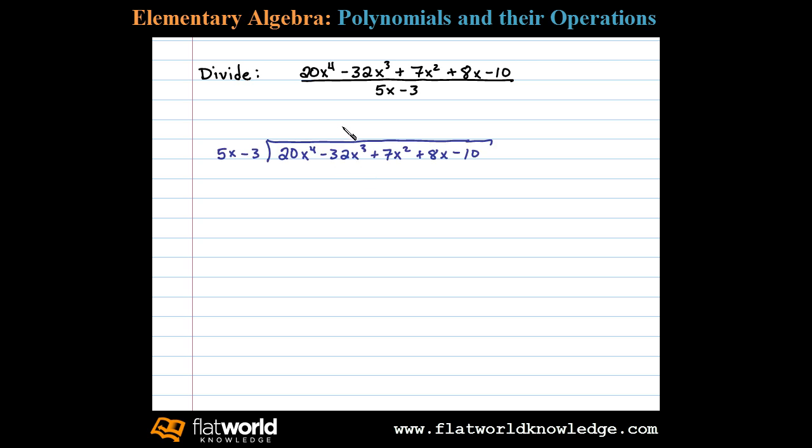Polynomial long division makes use of the division algorithm. We first determine what factor times 5x results in 20x to the fourth. To do that, we take 20x to the fourth and divide that by 5x. In this case, we obtain 4x to the third. This is where we'll start. If we multiply 4x to the third times this binomial, we get 4x to the third times 5x, or 20x to the fourth. The distributive property applies, so 4x cubed times negative 3 leaves us with minus 12x cubed. We take the factor and multiply it by both terms, after which we subtract.